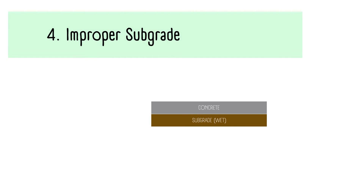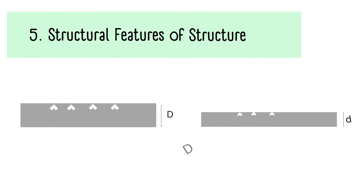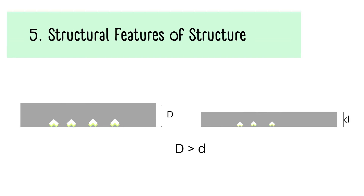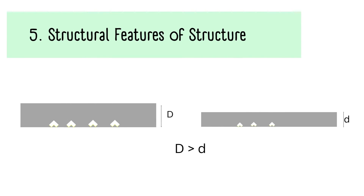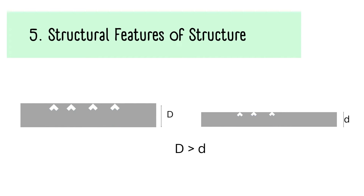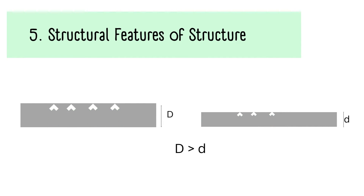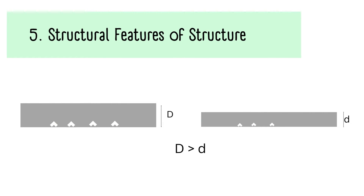Cause number five: structural features of the structure. With an increase in thickness of the concrete structure, the setting time also increases. This also increases the time for entrapped air and bleeding water within the concrete structure to come to the top of the surface and escape.